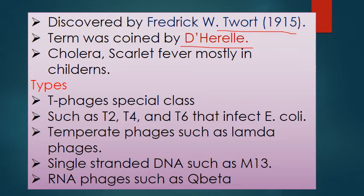Bacteriophages can cause diseases like cholera. The bacterium responsible for cholera is normally non-virulent, meaning non-pathogenic and does not cause disease. But when the bacteriophage genome enters the cholera bacterium, it alters the bacterium's genome so that it produces toxins, resulting in cholera. Similarly, scarlet fever is caused when bacteriophages infect bacteria and produce toxins, mostly affecting children.